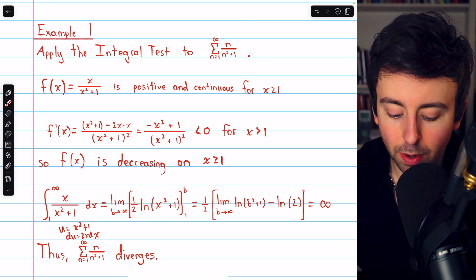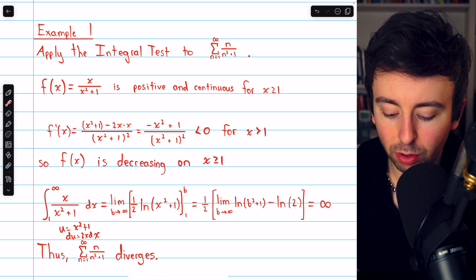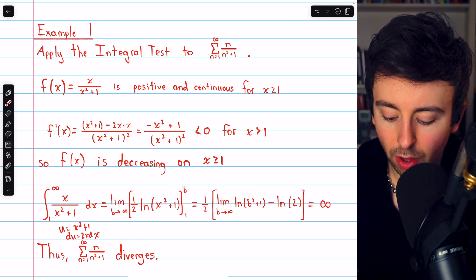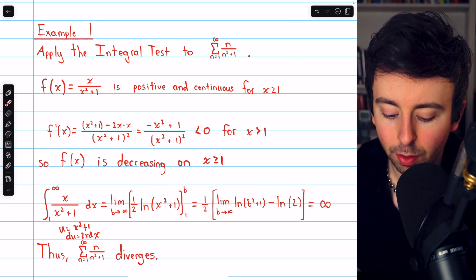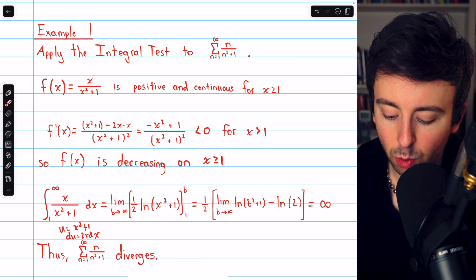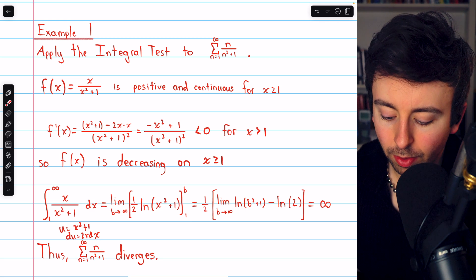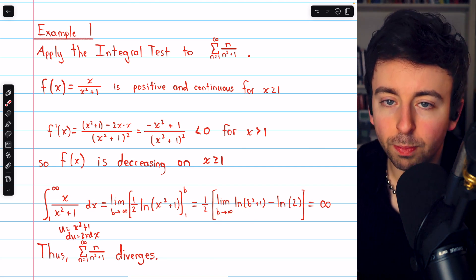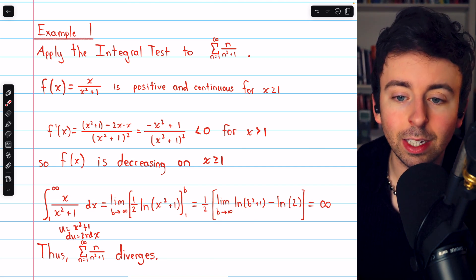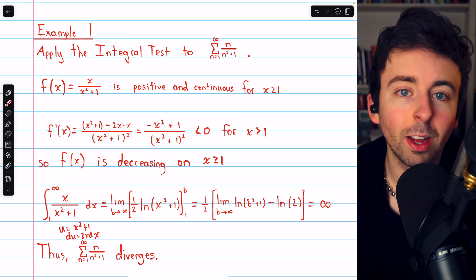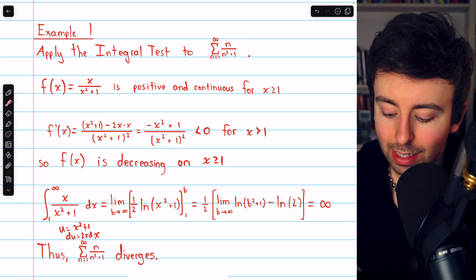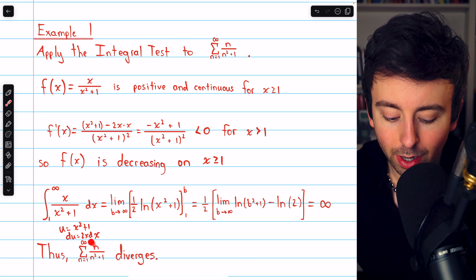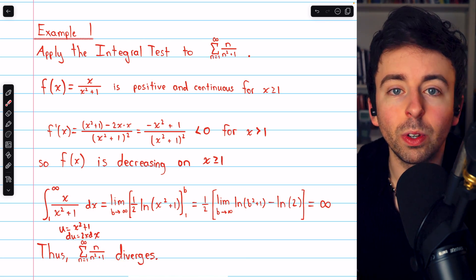We evaluate this integral from 1 to b and take the limit as b goes to infinity. Plugging in those bounds and taking out the 1/2, we have the limit as b goes to infinity of the natural log of (b squared plus 1) minus the natural log of 2. The natural log of (b squared plus 1) diverges to infinity as b goes to infinity, and subtracting log 2 does not change that. So this integral diverges to infinity, hence the corresponding series also diverges.